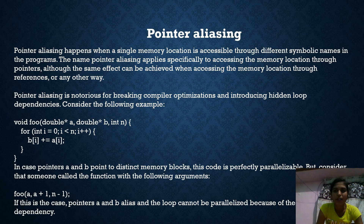Next, we can see pointer analysis. Pointer analysis happens when a single memory location is accessible through different symbolic programs. The name 'pointer aliasing' appears specifically when accessing a memory location through a pointer or through the scale effect. It can also be achieved when accessing the memory location through references. Pointer aliasing is notorious for breaking compiler optimization and introducing hidden loop dependencies.